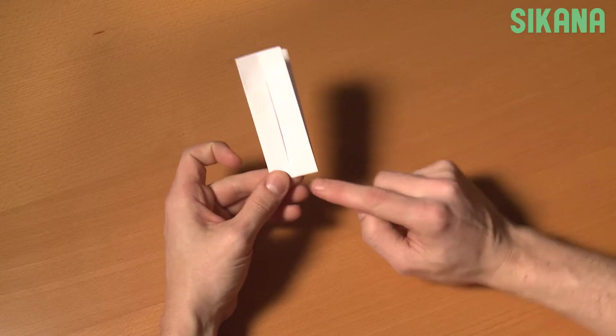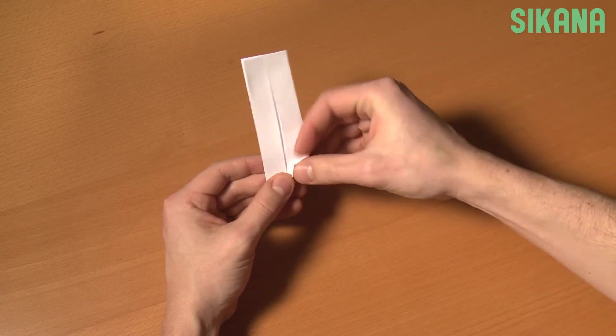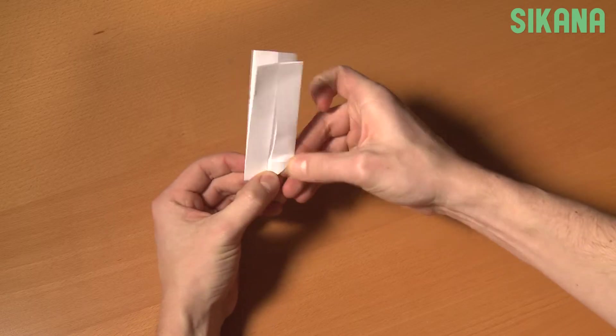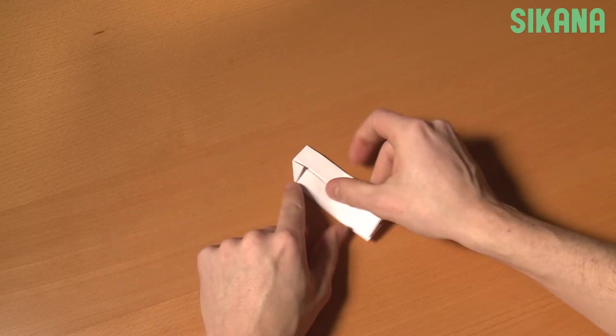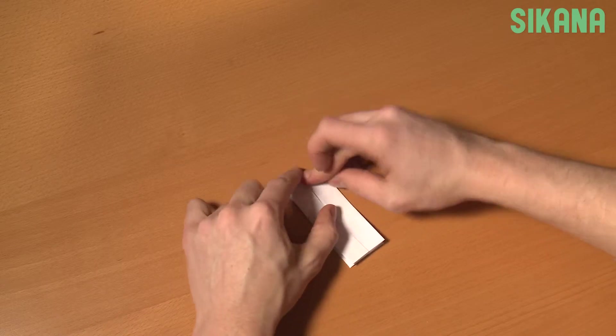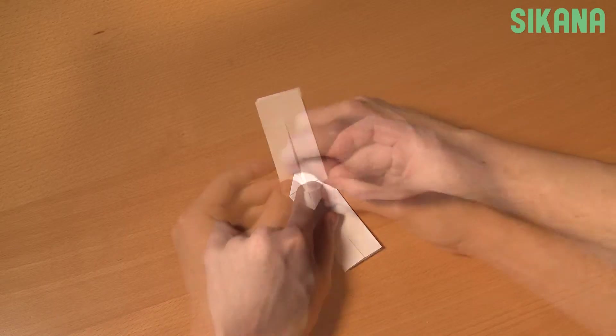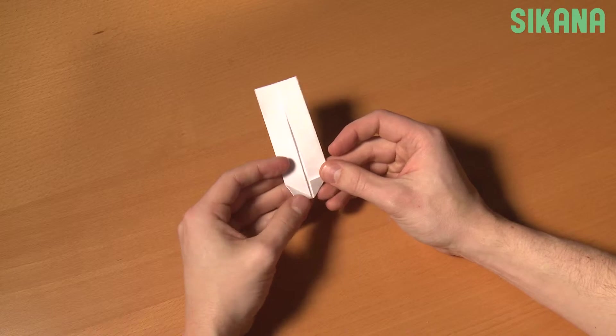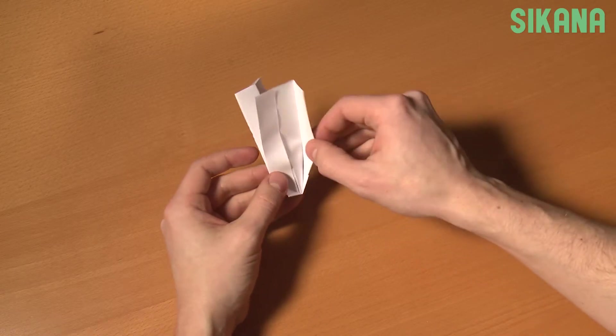Then fold the edge on the center line. Do the same on the other side. The next part is a bit more complicated. Open it like this and bend both ends.